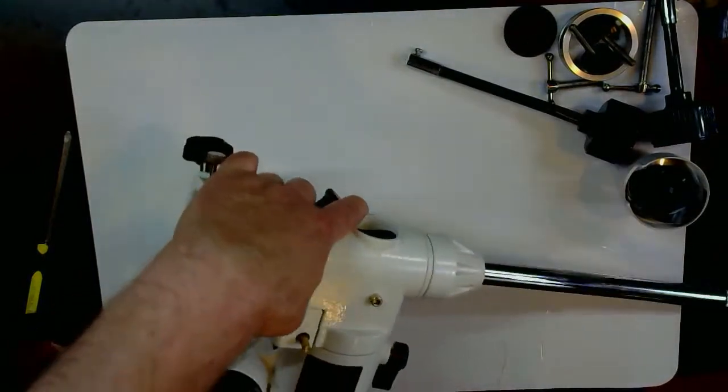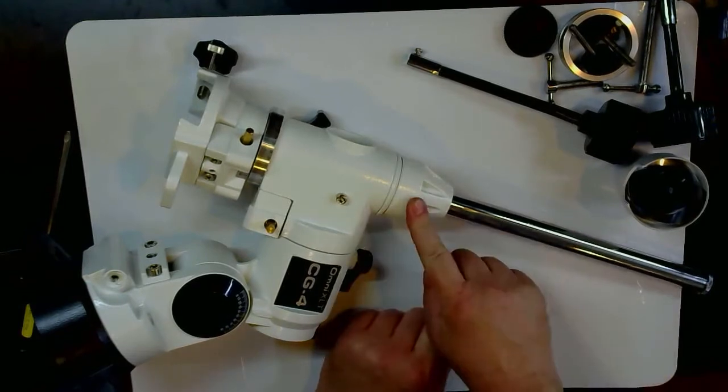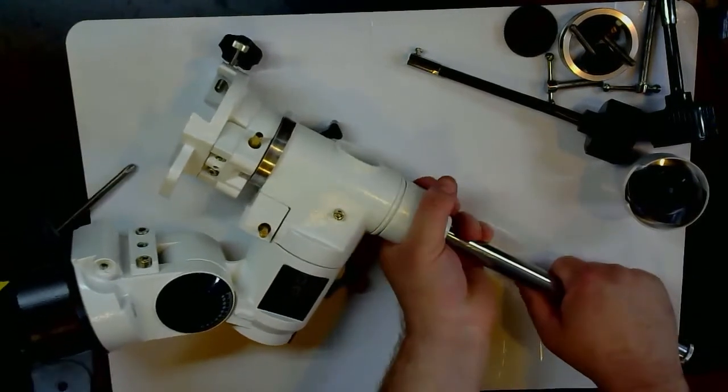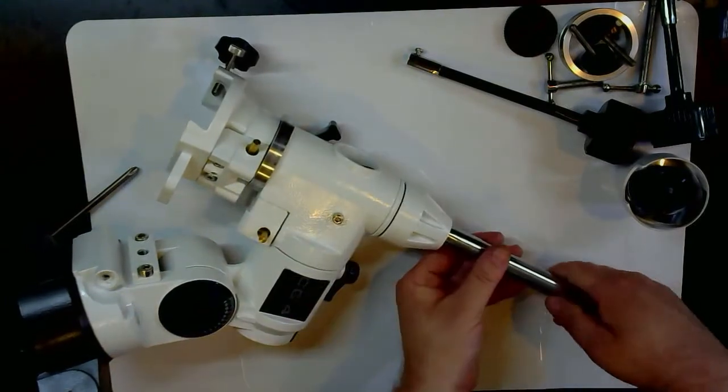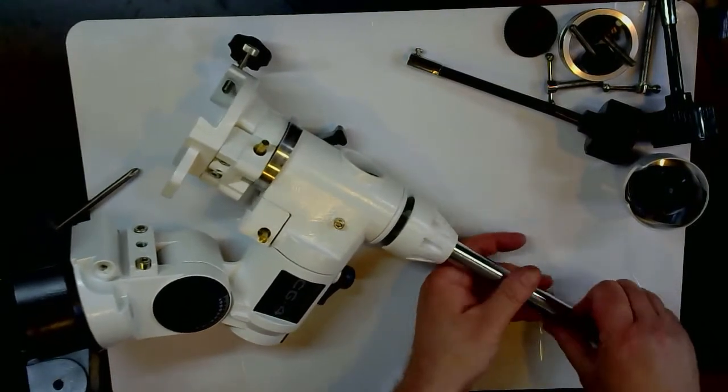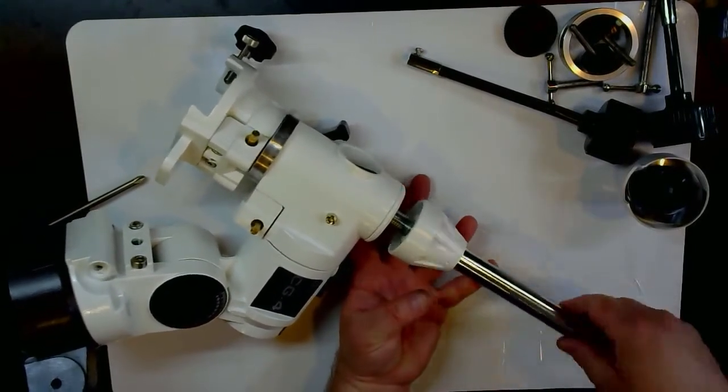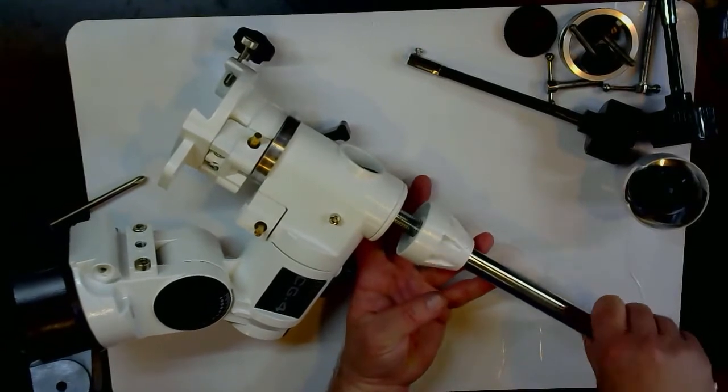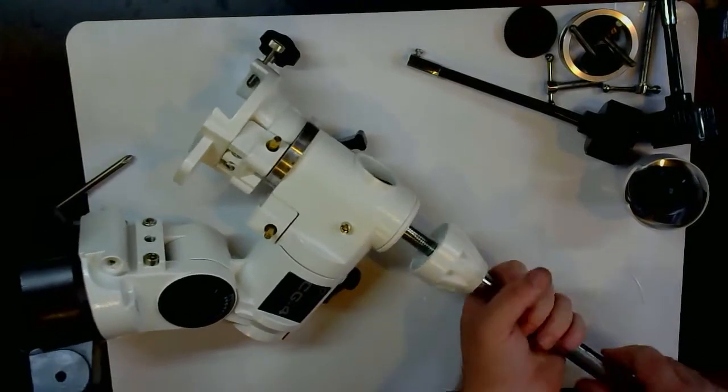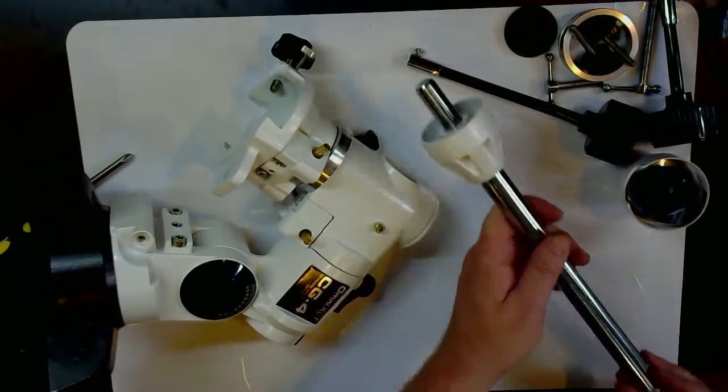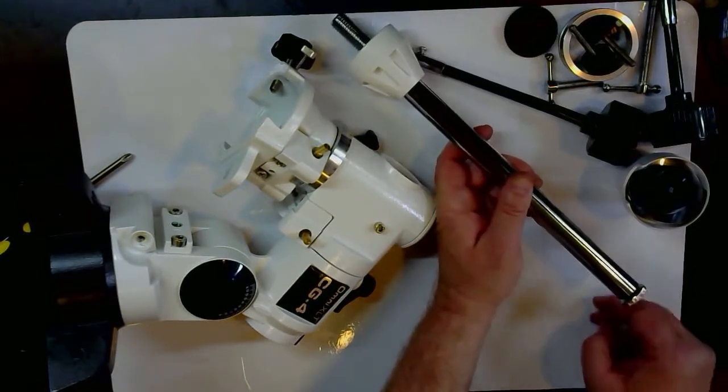Next step is bring this around - the counterweight bar can come off. This piece here is actually a giant locking nut. Hold the bar with one hand and loosen that a little bit with the other hand. Then the whole thing spins off. Counterweight bar coming off. That comes off.